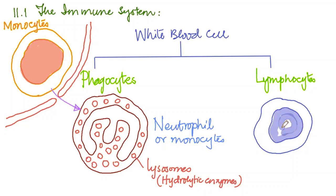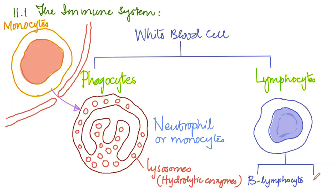Lymphocytes eventually transform into two different types of cells: B lymphocytes and T lymphocytes. All blood cells, including B and T lymphocytes, are formed inside the bone marrow. They are called B lymphocytes because they develop in the bone marrow, while T lymphocytes develop in the thymus gland — a tiny gland found at the inner side of the end of the sternum, or chest bone.